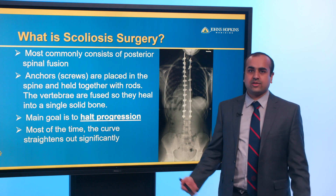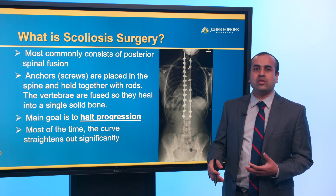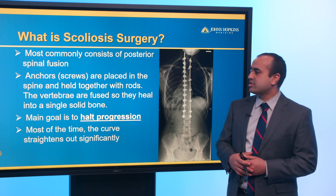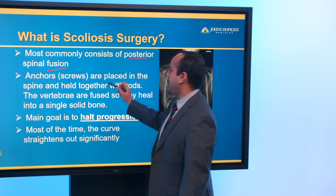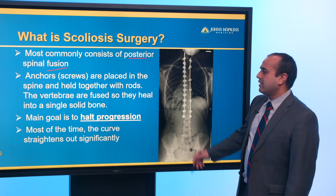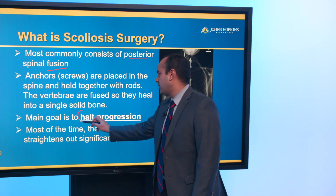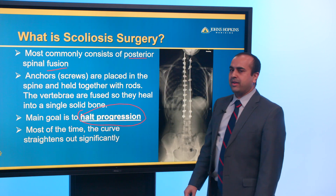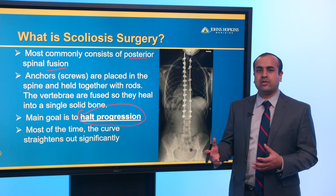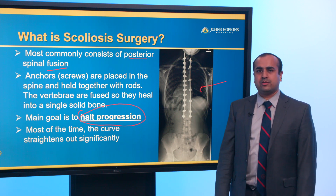What is scoliosis surgery? It has changed quite a bit over the years. Historically it involved various bone grafts, hooks, and other devices. Now it most commonly consists of posterior spinal fusion, where anchors — which are screws — are placed in the spine and held together with rods. The vertebral bodies are fused together, healing into a solid mass of bone. The main goal is to halt curve progression. Because these screws are so powerful, you can achieve good control of the spine and actually straighten out the curve significantly, as demonstrated here.